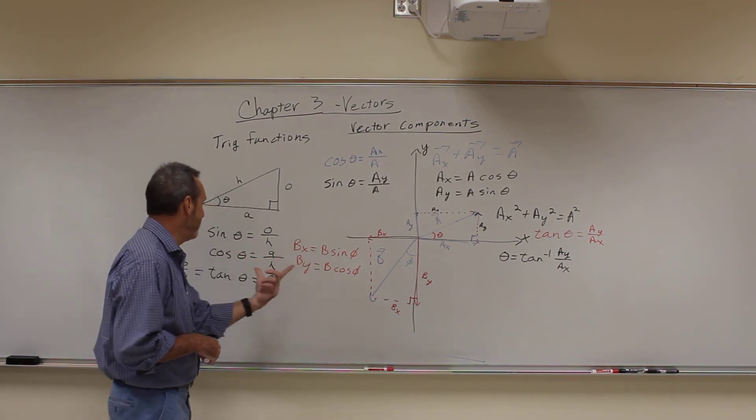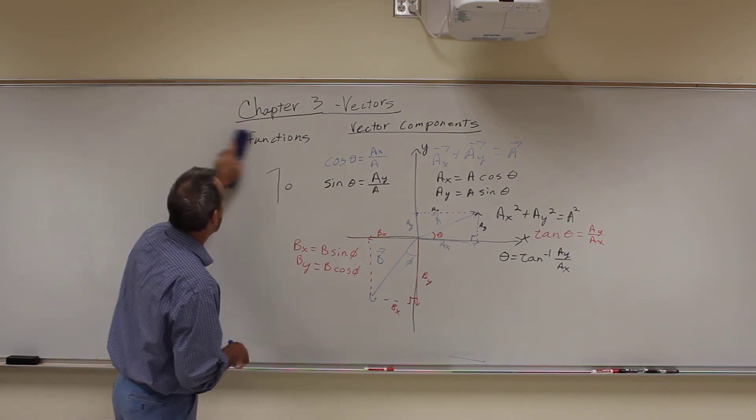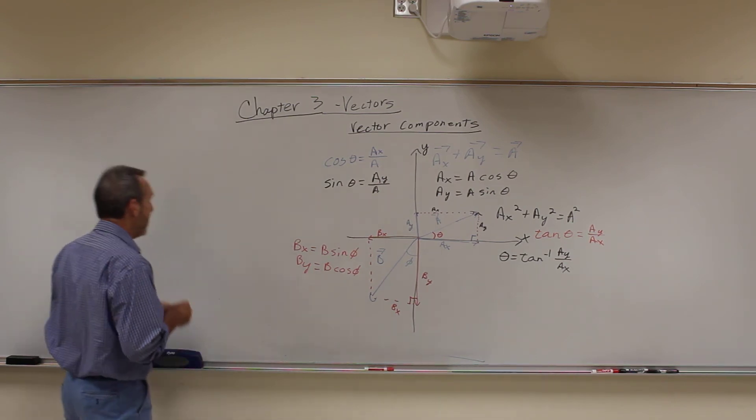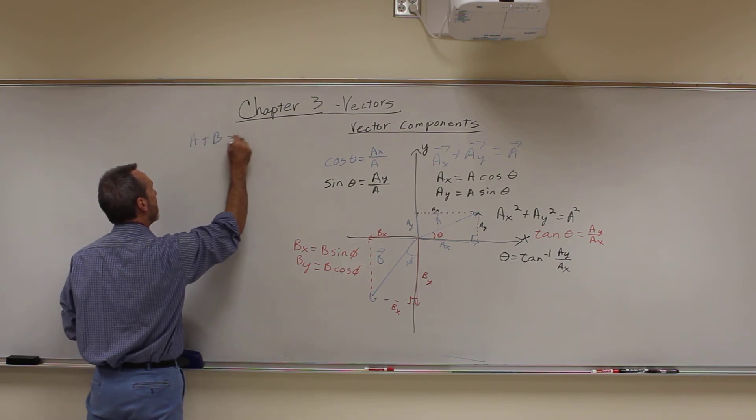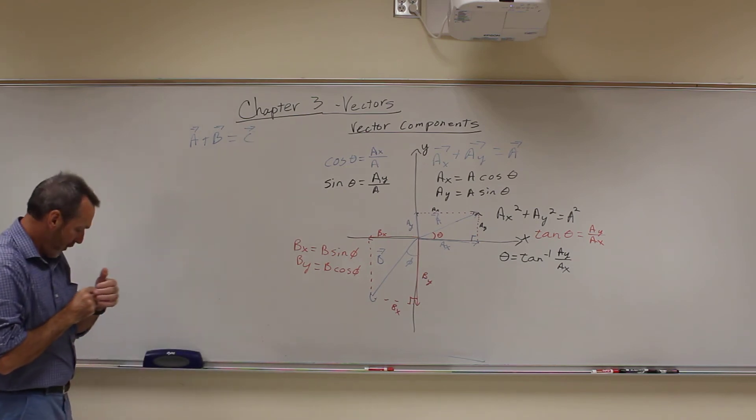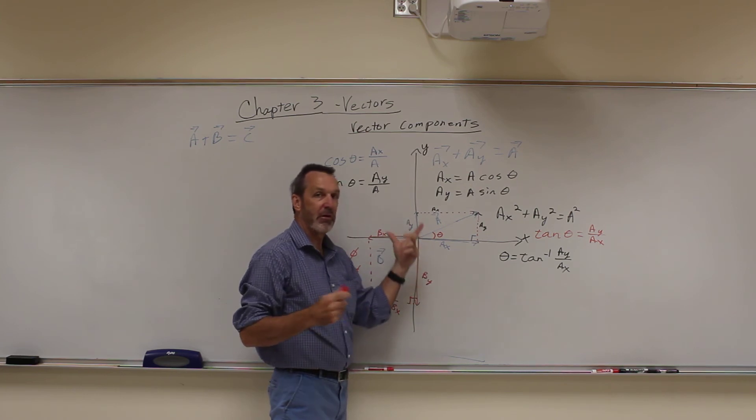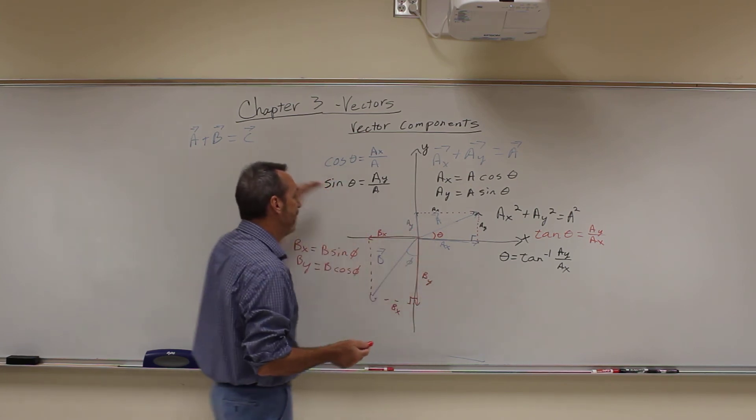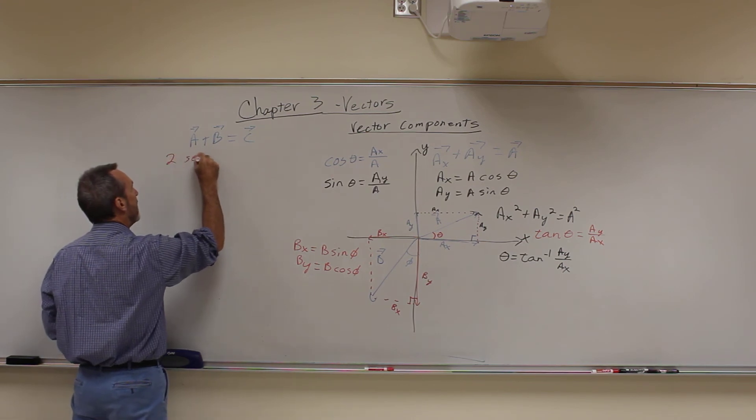Alright. Once I have these components, then vector addition changes. Because if I say, oh, I want to take A plus B and figure out what C is. These are all vectors. Well, if I have all the vectors in the X direction and vectors in the Y direction, I've already taken the components of it, then I can do it as two separate equations. You do it as two separate equations.